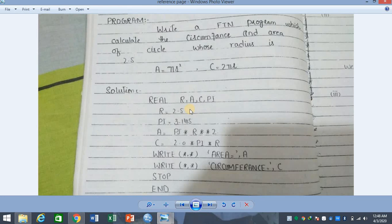It means the compiler first reads the R value, then reads the PI value, then calculates the area. The area will not calculate first and then write — no. The area calculates what command you have given, and it will run by default.